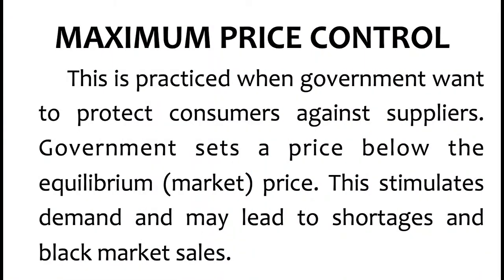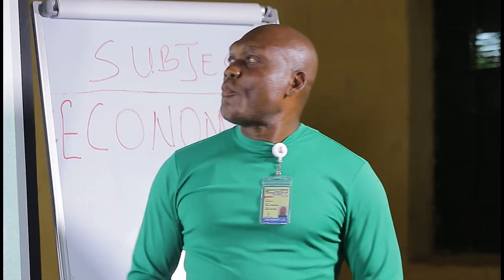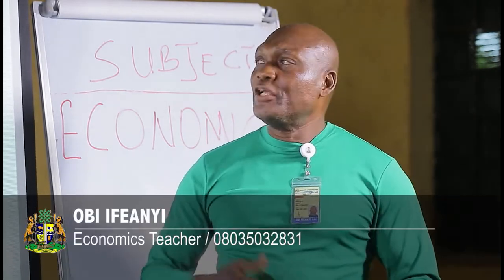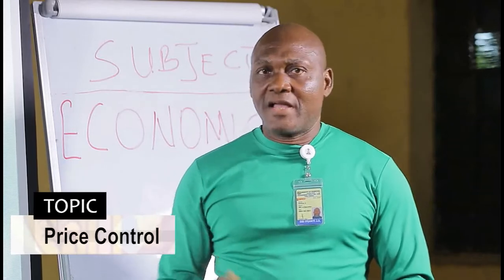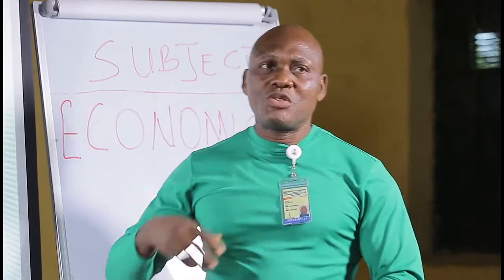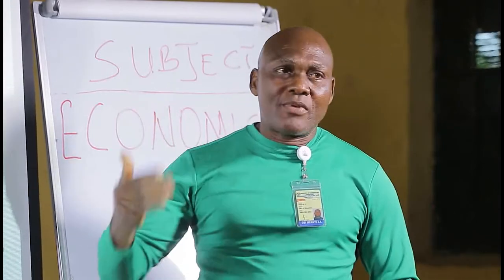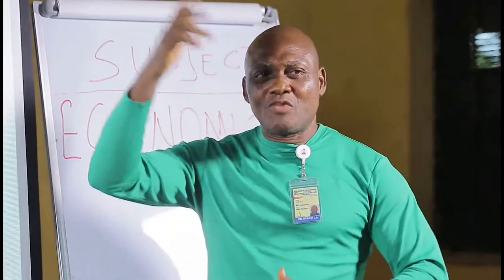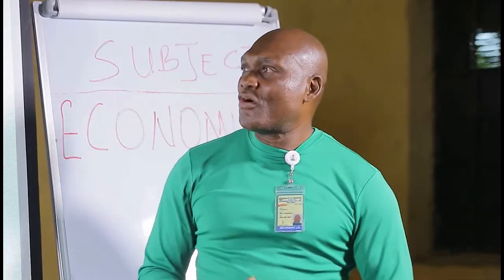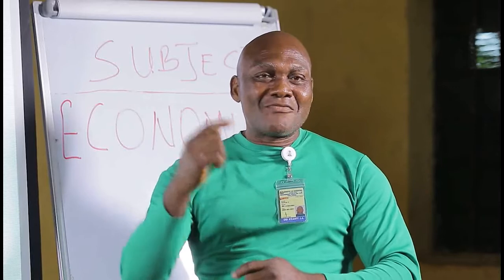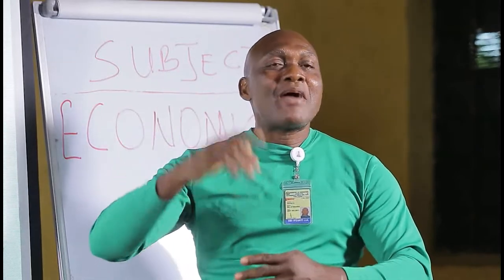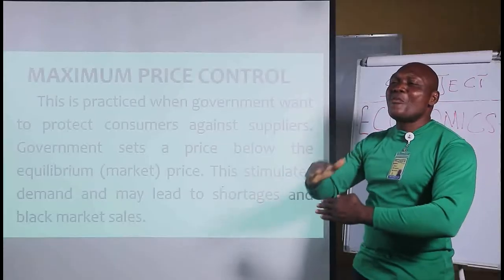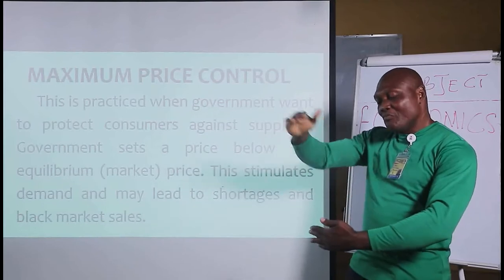Now let us look at maximum price control. Just as minimum price is minimum high price, maximum price is maximum low price. Maximum should be high, but this time it is low — set below the equilibrium price. So when government wants to favor consumers, government will set a maximum low price below the equilibrium price.